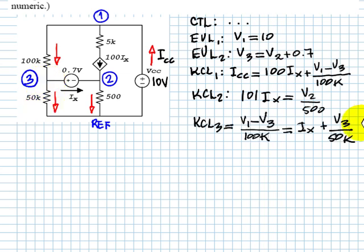And that is the set of equations that we need to solve. So let's see what are the unknowns. Apparent unknowns are V1, V3, V2, that is three. ICC, that is four. And Ix, that is five. And we have five equations.